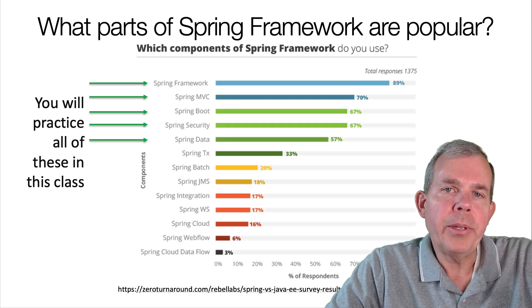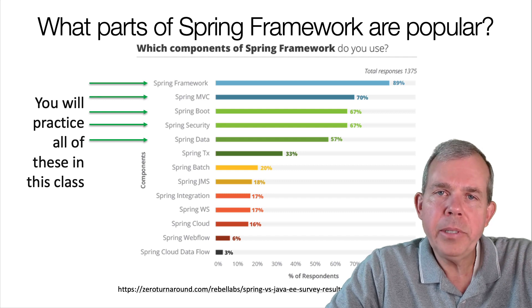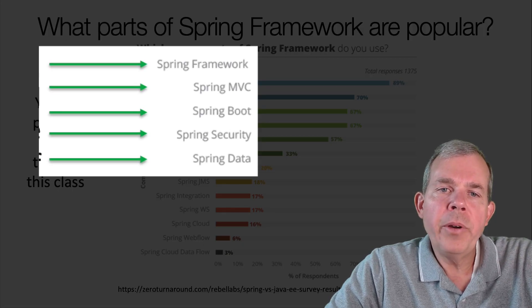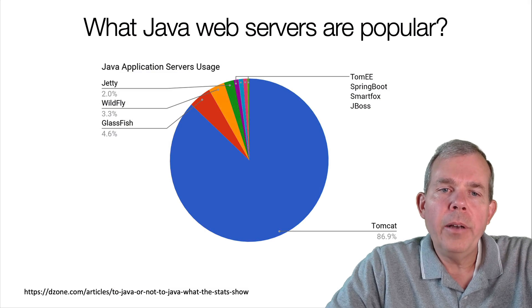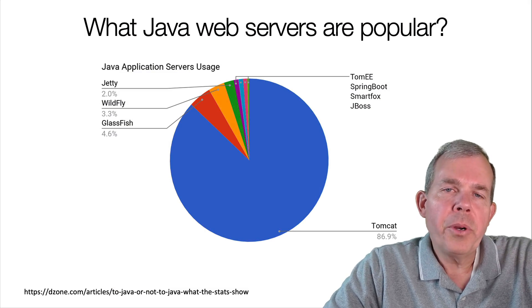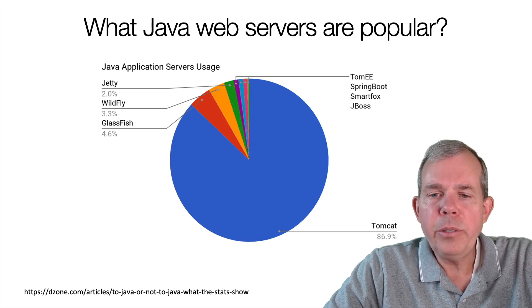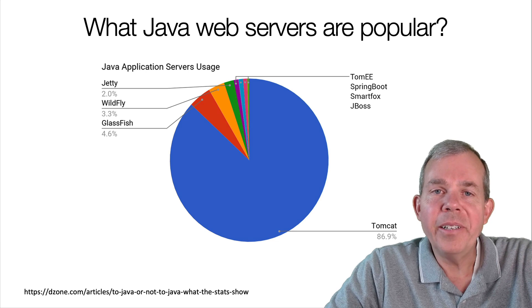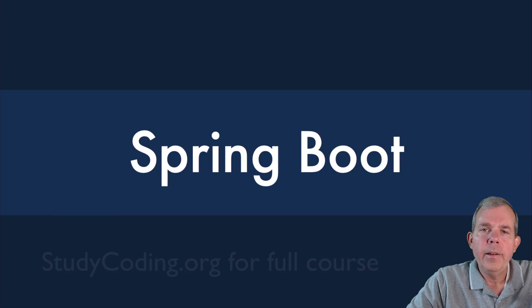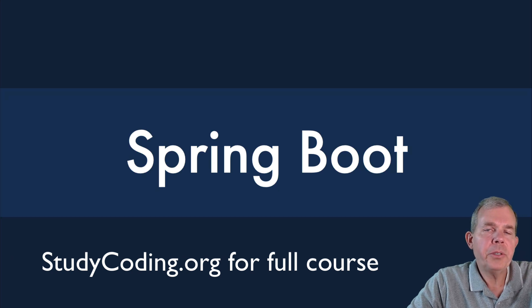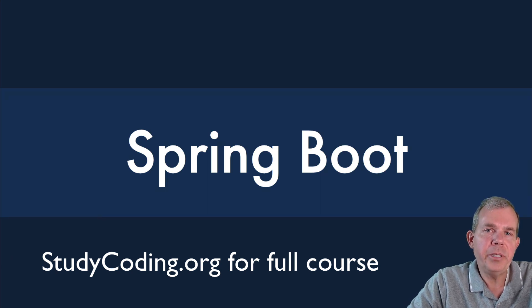Which framework pieces are popular? You can see that the top list of the Spring framework has different components that do different things, and we are going to use the ones that are the most popular — the course you're about to see will practice all of these items. What web server are you going to use? We're going to be installing a package that automatically uses the Tomcat web server, which by obvious conclusions from this chart is the most popular as well. You'll be able to deploy your applications to a server out on the cloud when you're done. Make sure you subscribe and let's go on to create some projects using this technology.